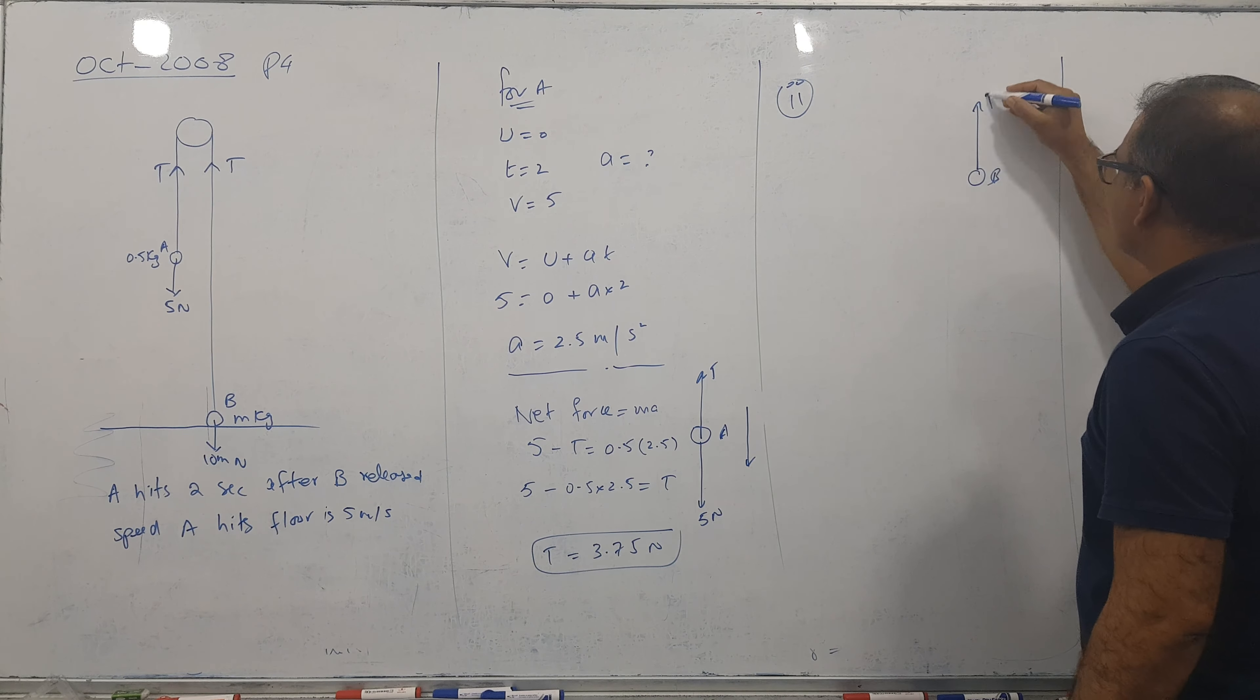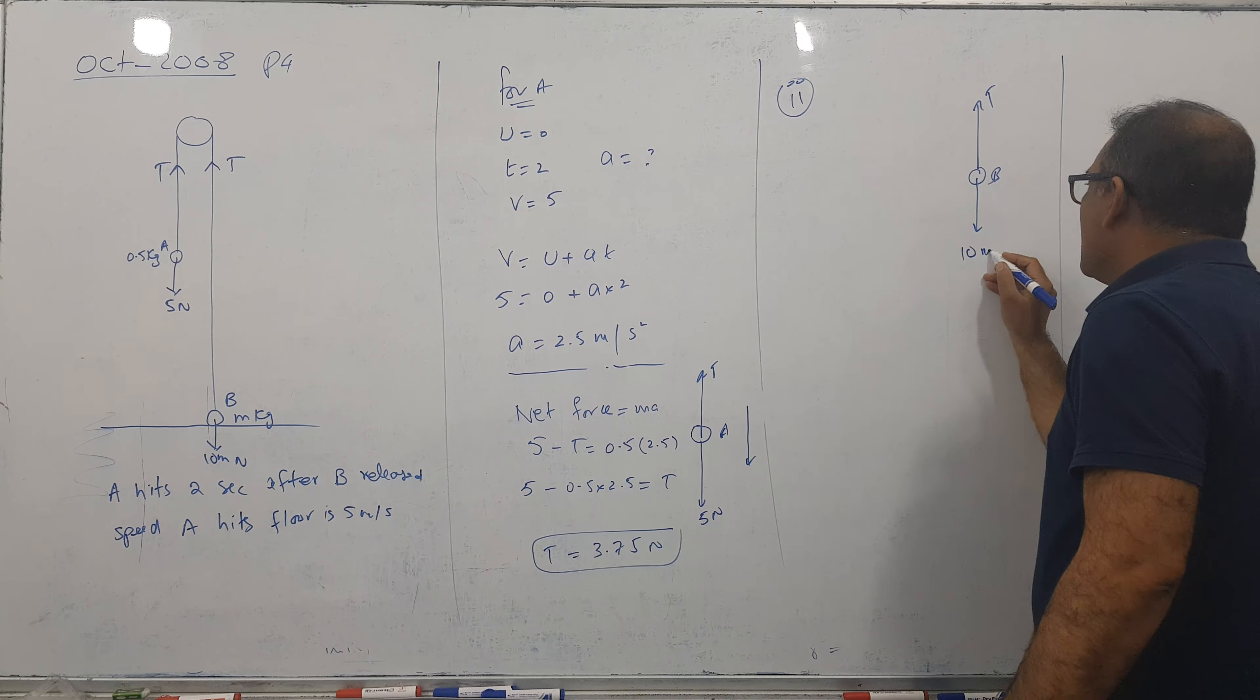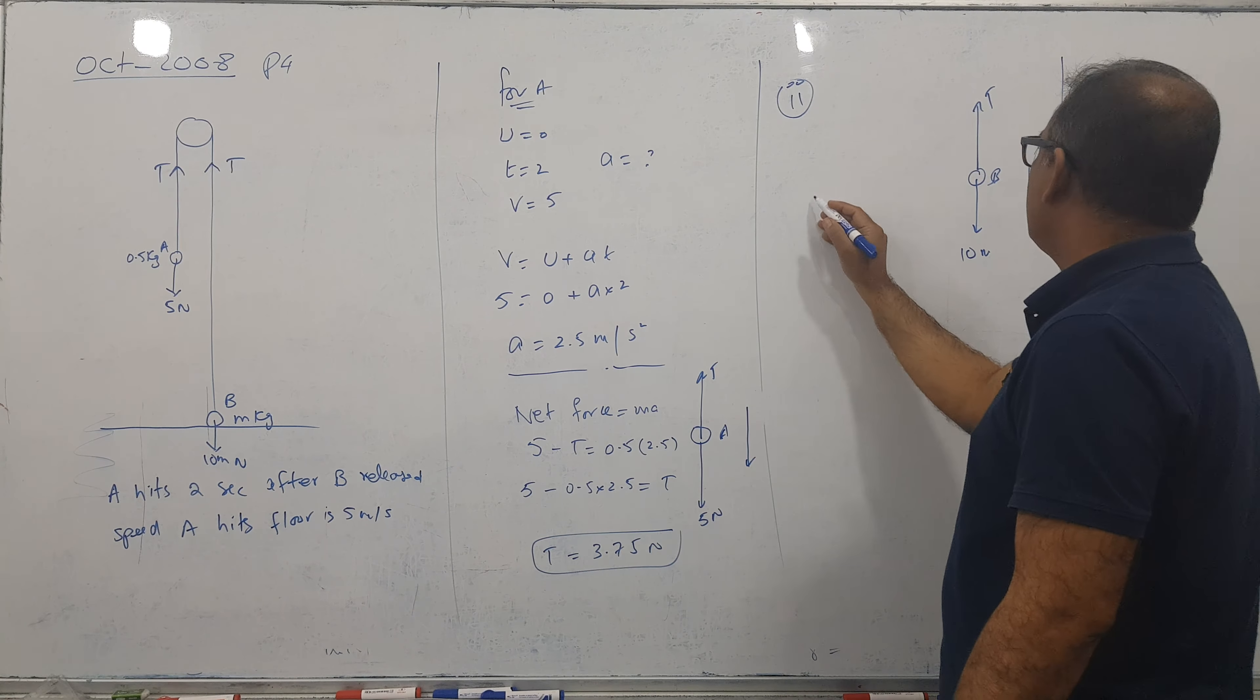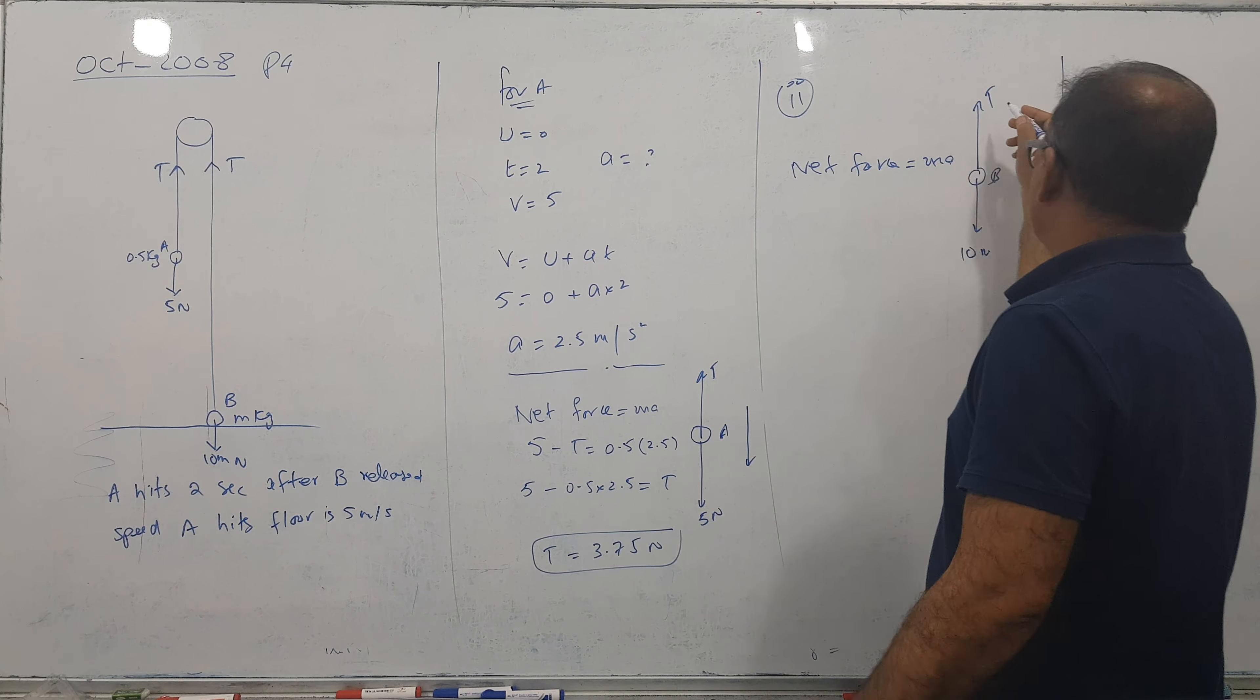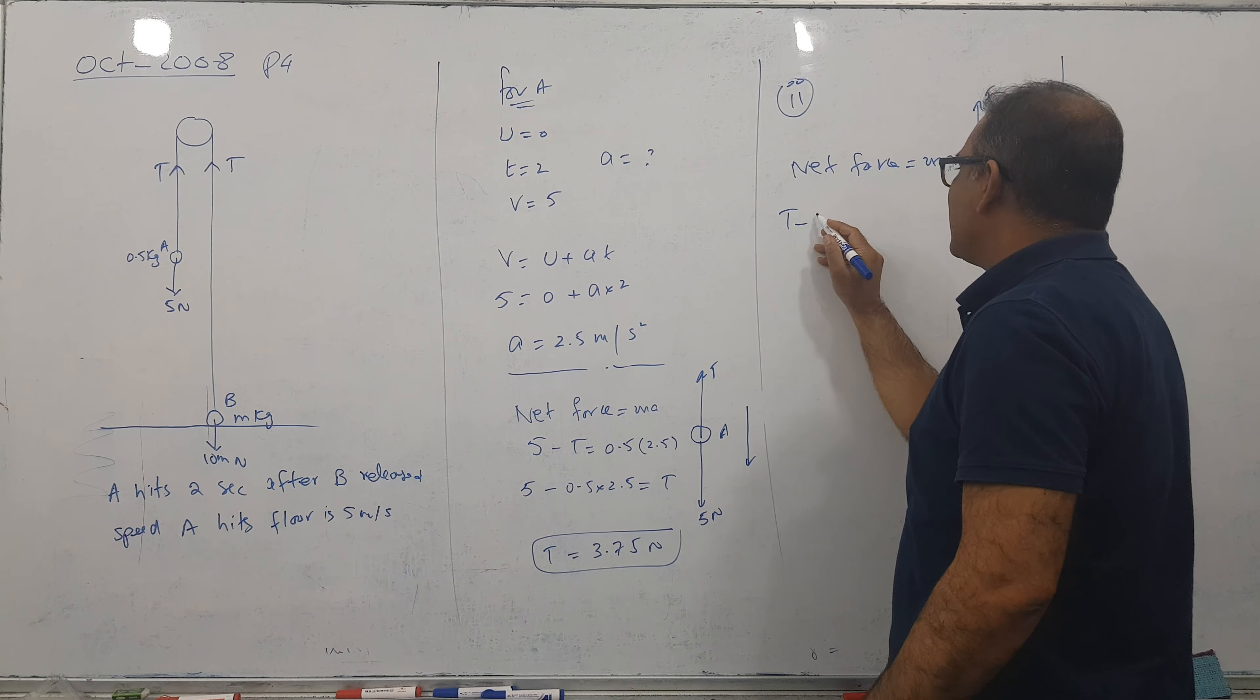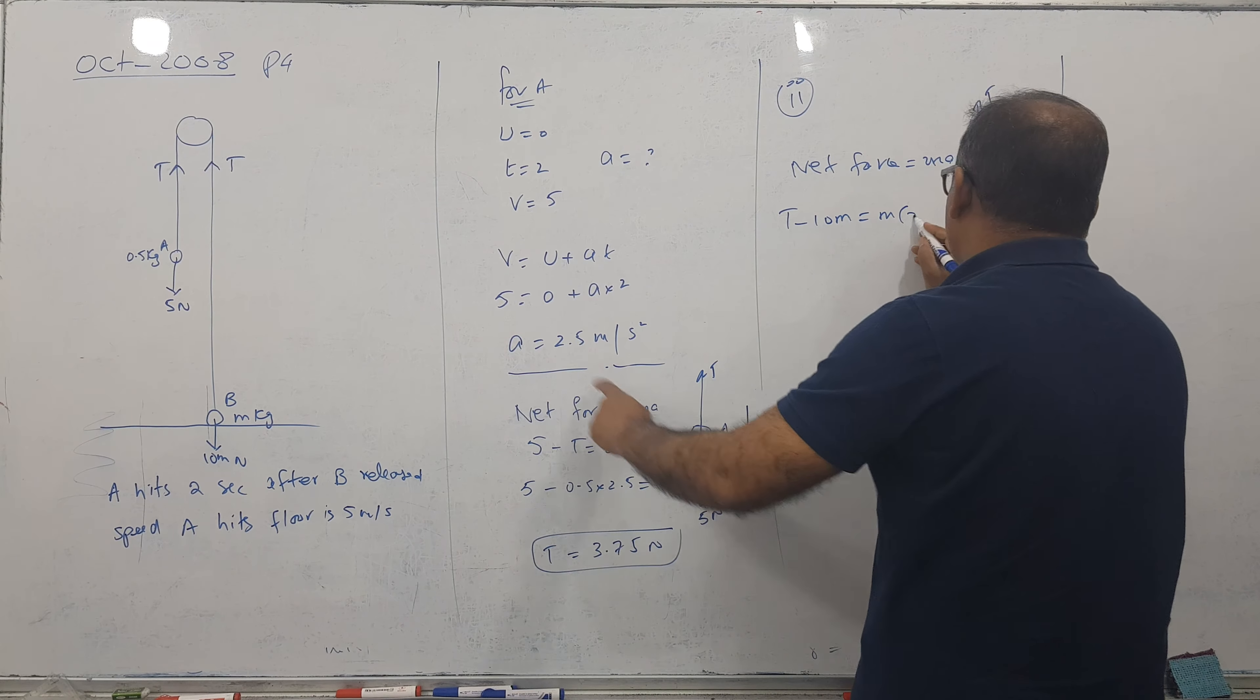This is upward tension and downwards weight component 10M. Motion is upward, so net force equal to MA. And net force, because it's going upward, so it's bigger and it's smaller. So tension minus 10M equal to M times A, and A we know is 2.5.